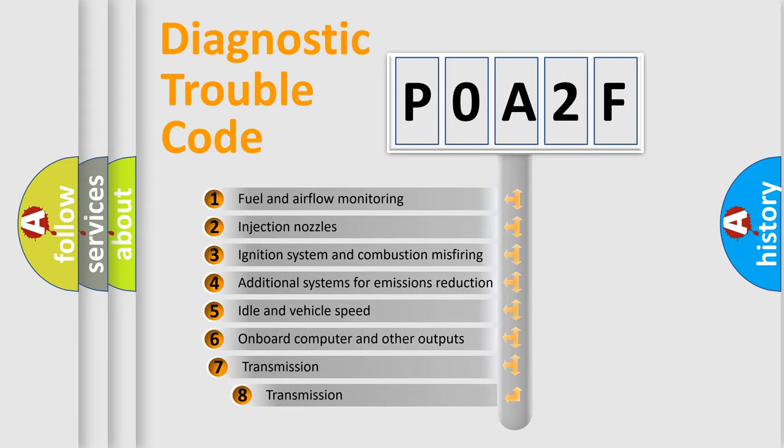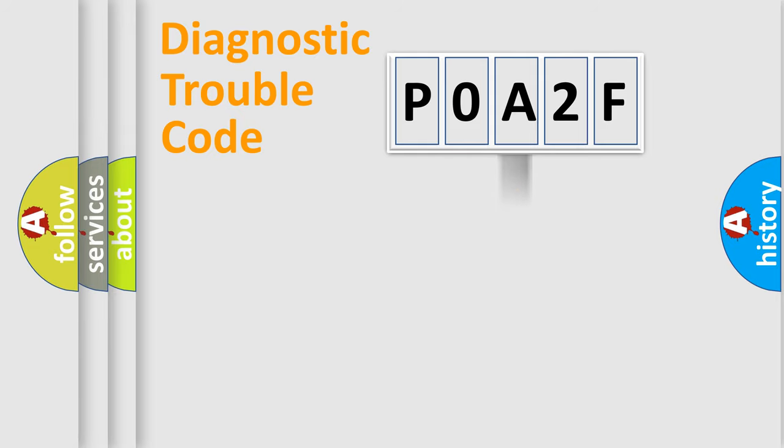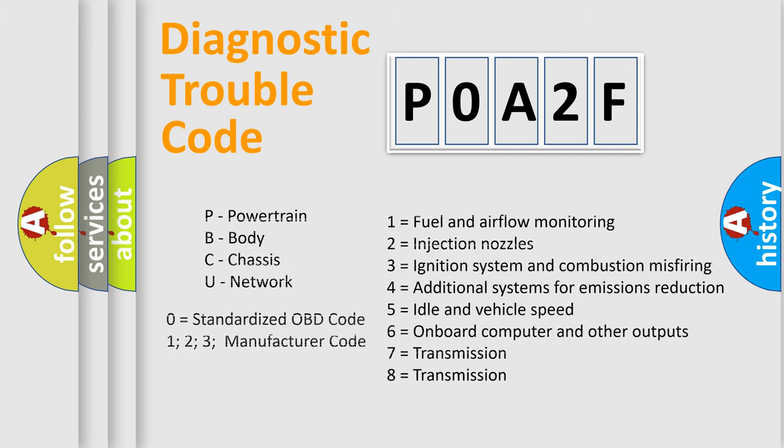The third character specifies a subset of errors. The distribution shown is valid only for the standardized DTC code. Only the last two characters define the specific fault of the group. Let's not forget that such a division is valid only if the other character code is expressed by the number zero.